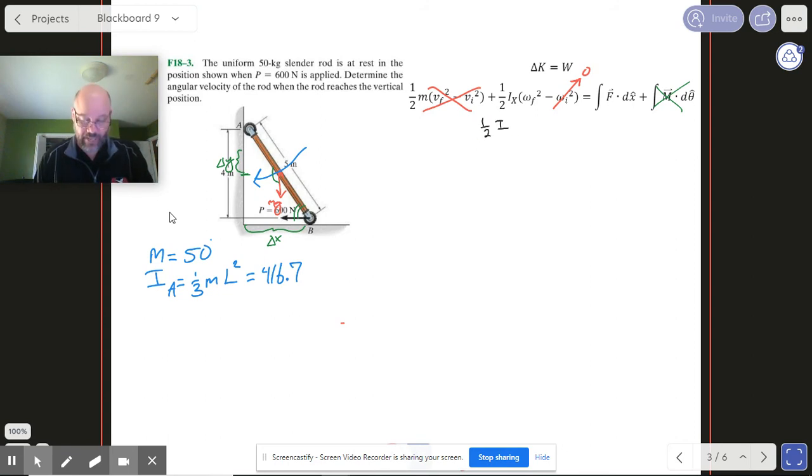So we're gonna be getting rid of that term right there. So let's write all this down. We get 1/2 I_a ω_final². Okay, now let's start with the weight. The weight is downwards, okay, so I'm gonna have a minus mg Delta Y.